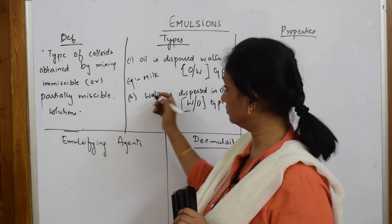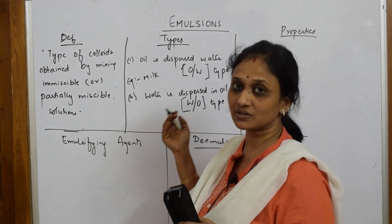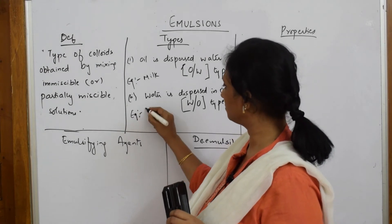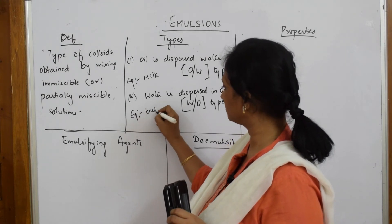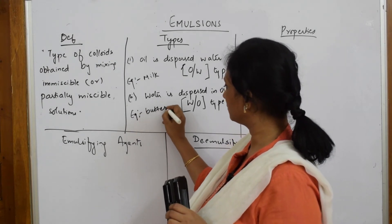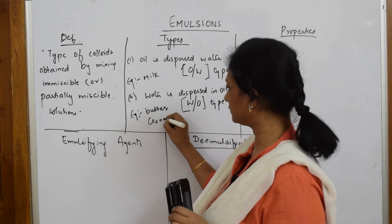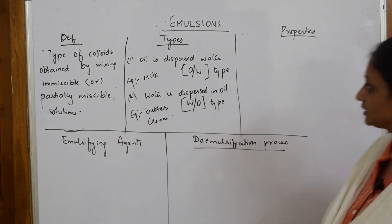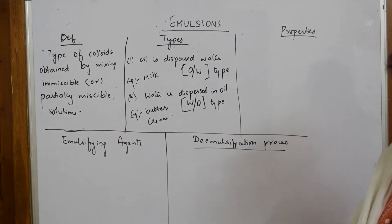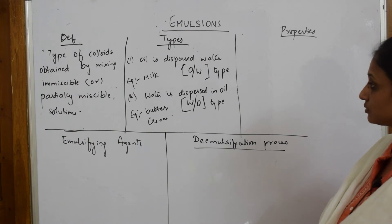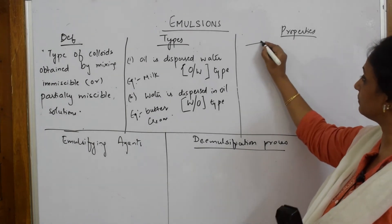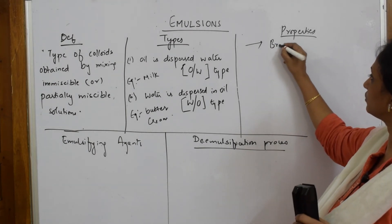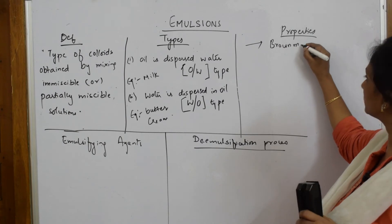A common example of the oil-in-water (O/W) type is milk, which contains water. Examples of the water-in-oil (W/O) type include butter and cream.